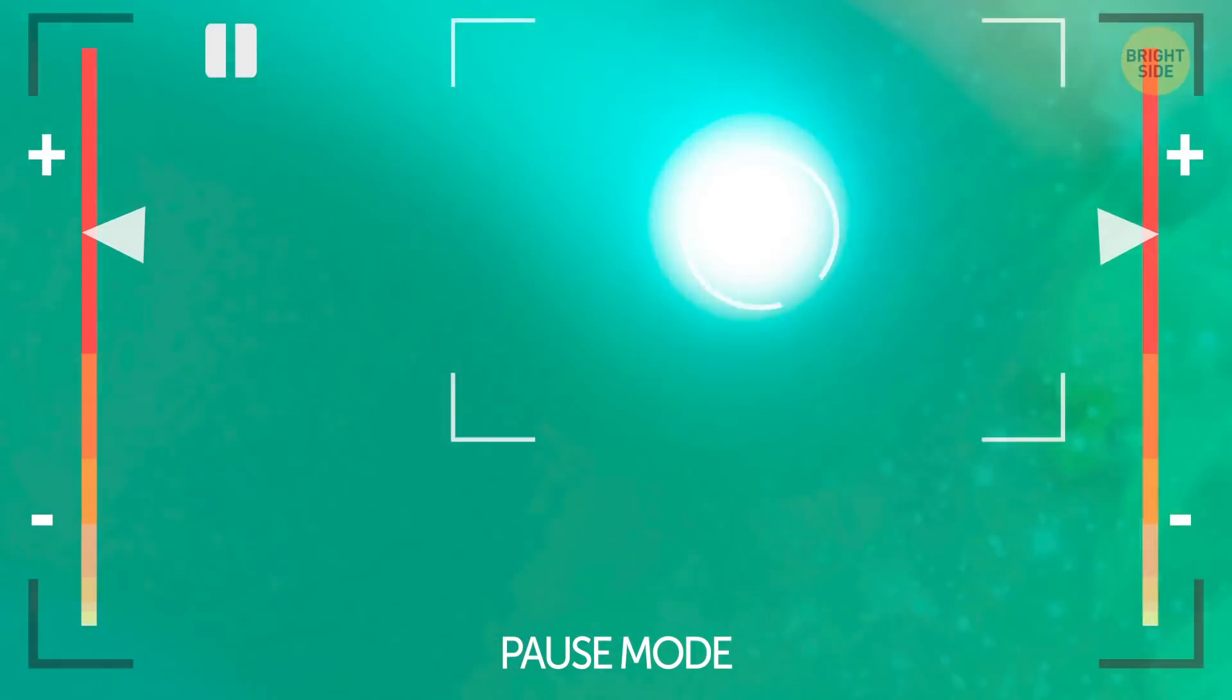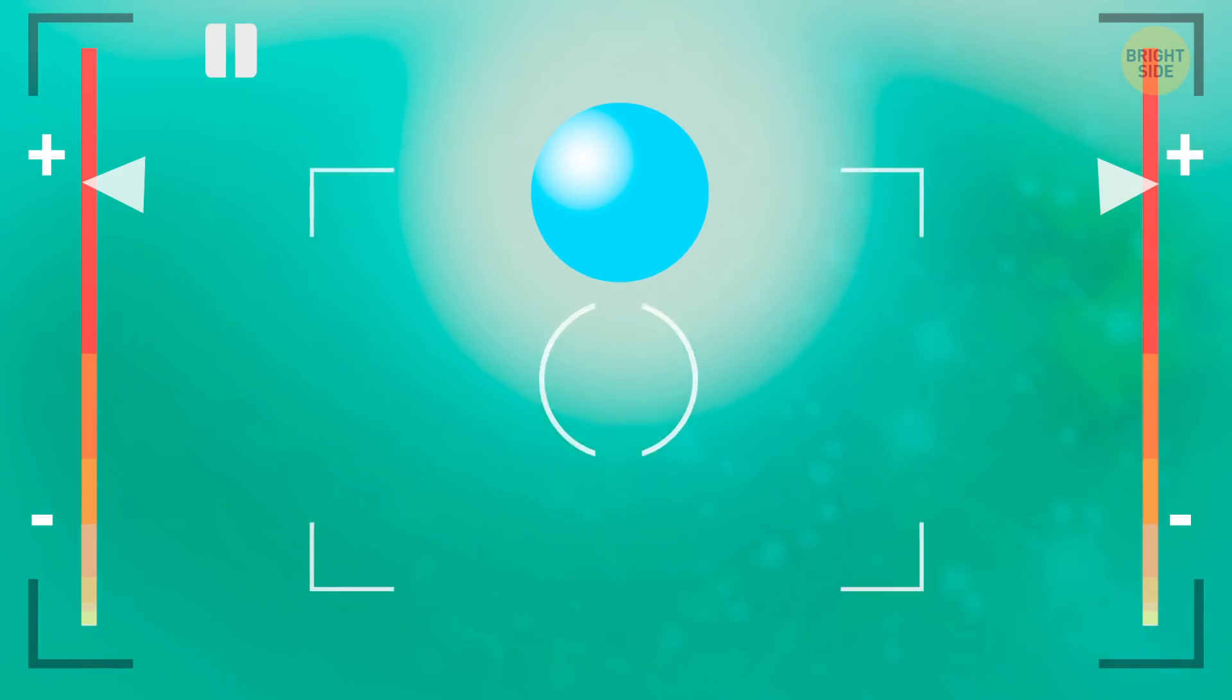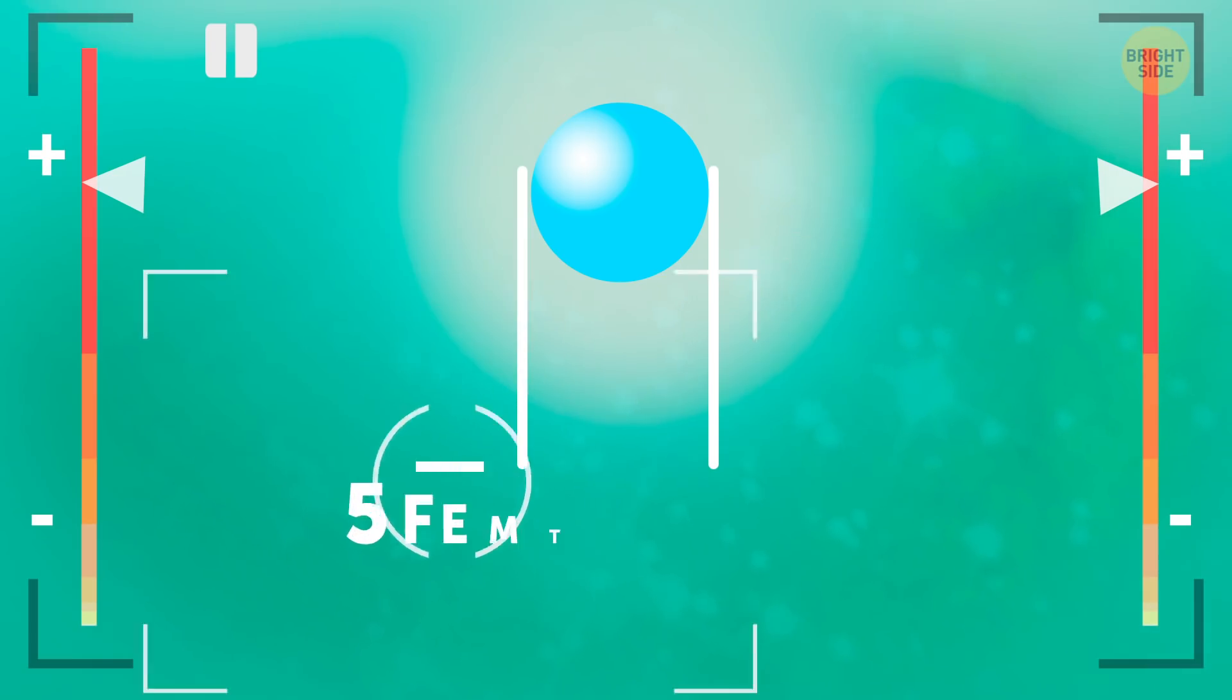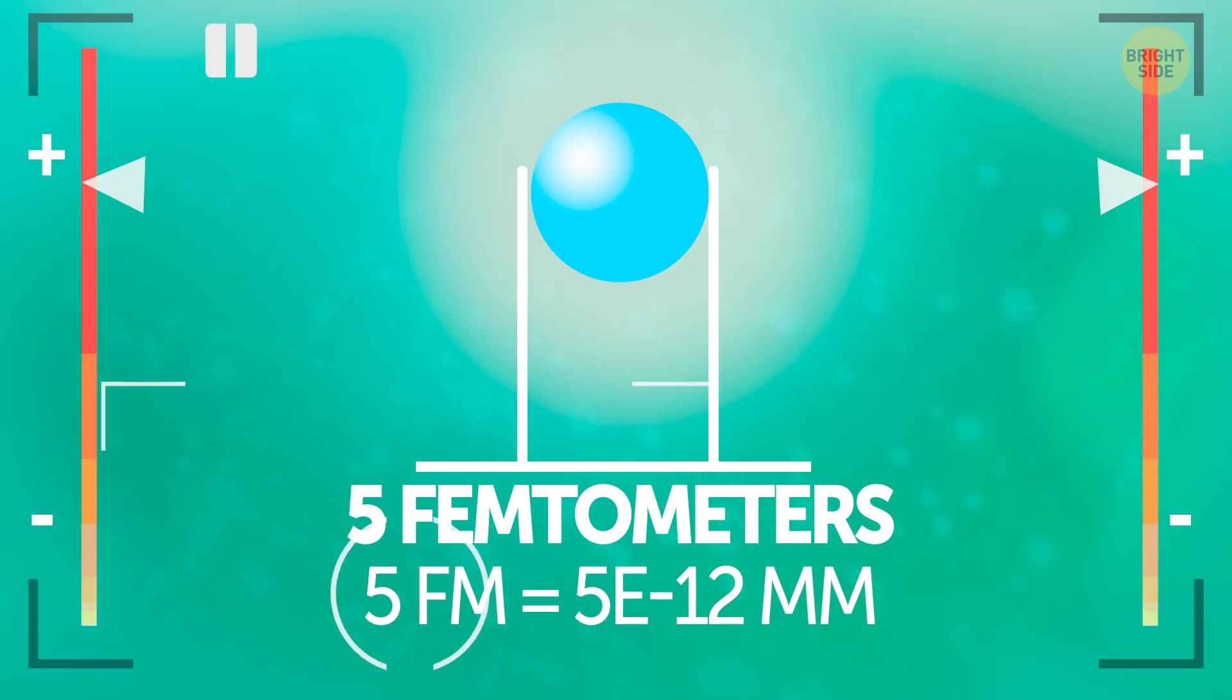Speaking about electrons, these buddies haven't been properly measured since they're just too small for that. Anyway though, the classical model of measurement says an electron is about 5 attometers in size, that is, 5 trillionths of a millimeter.